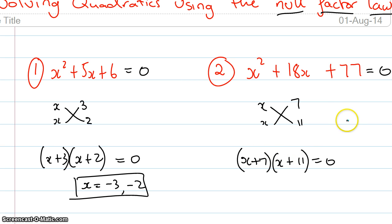The actual null factor law looks like this: if a times b equals 0, then a equals 0 and b equals 0. I guess we could have an or in here but it just means that a could equal 0 or b could equal 0. In this case both of them will be but just at different times.